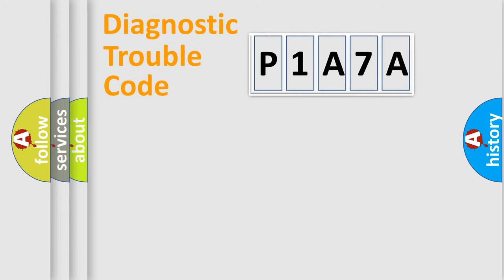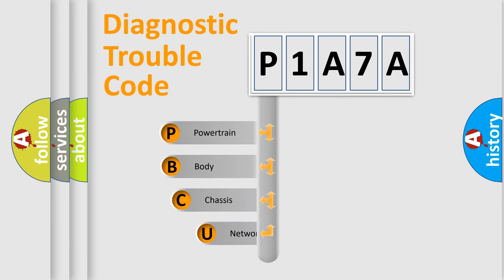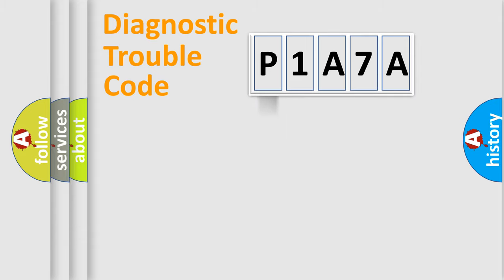Let's do this. First, let's look at the history of diagnostic fault code composition according to the OBD2 protocol, which is unified for all automakers since 2000. We divide the electric system of an automobile into four basic units: Powertrain, body, chassis, and network.